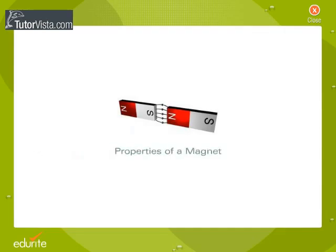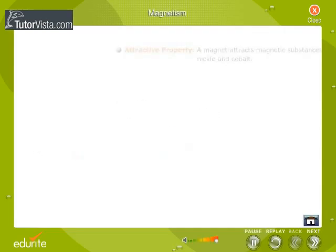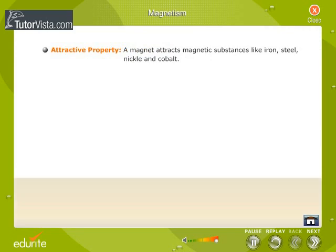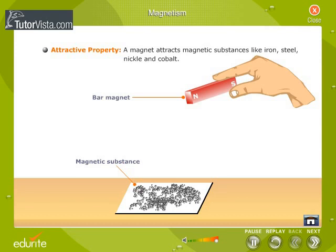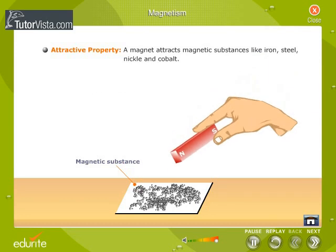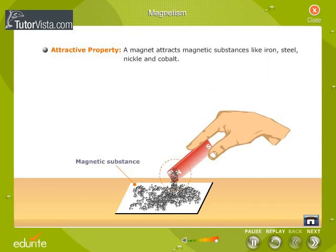Attractive property: a magnet attracts magnetic substances like iron, steel, nickel, and cobalt. This property is used to separate iron from a mixture and also to remove iron filings from the eyes.